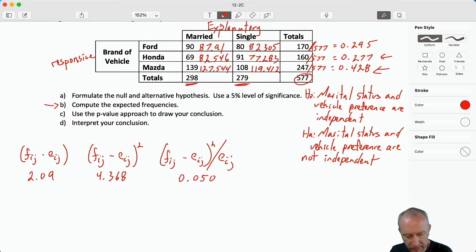That's going to round up there. Now we're on to singles for Ford: 80 minus 82.305, squared, divided by 82.305.